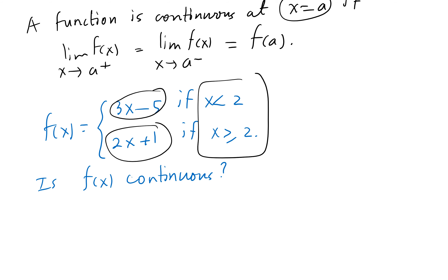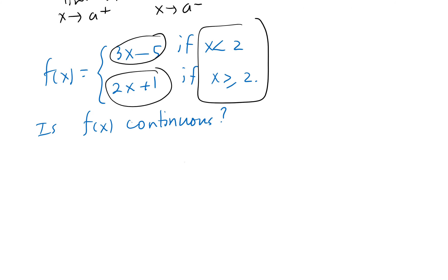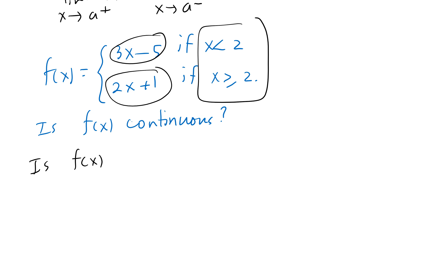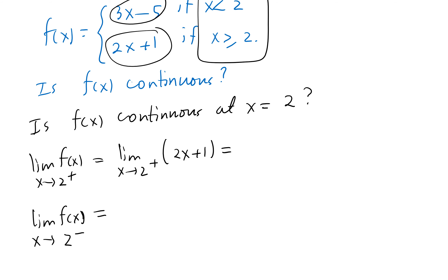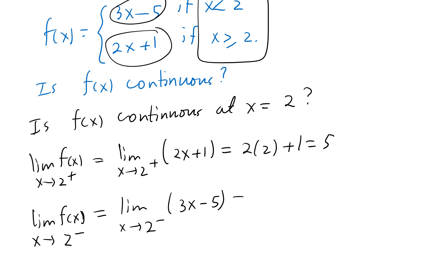To check continuity of f(x) at x = 2, we need the limit from the right side and the limit from the left side. From the right side we use 2x + 1, which gives 2(2) + 1 = 5. From the left side we use 3x − 5, which gives 3(2) − 5 = 1.